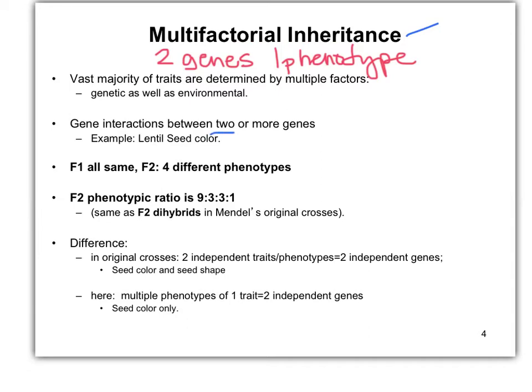An interaction between two or more genes that results in one trait. What did we learn about in the dihybrid? We talked about two different genes together and how they're inherited, but it also resulted in two traits — yellow and round, or tall and wrinkled. In this case, it's two genes that result in one phenotype: seed color. Two genes, one phenotype.